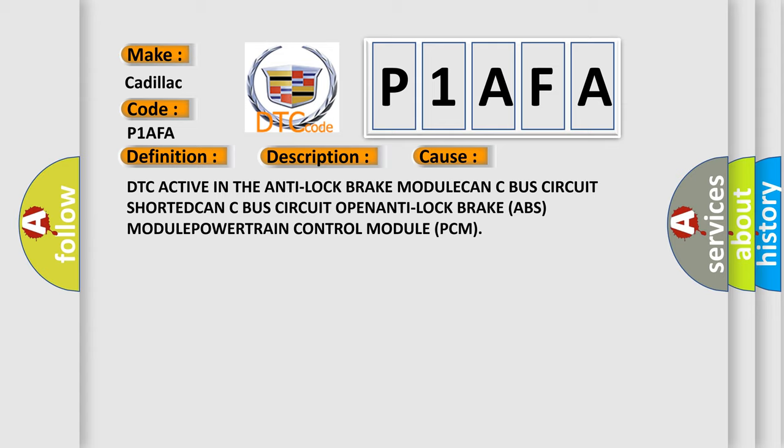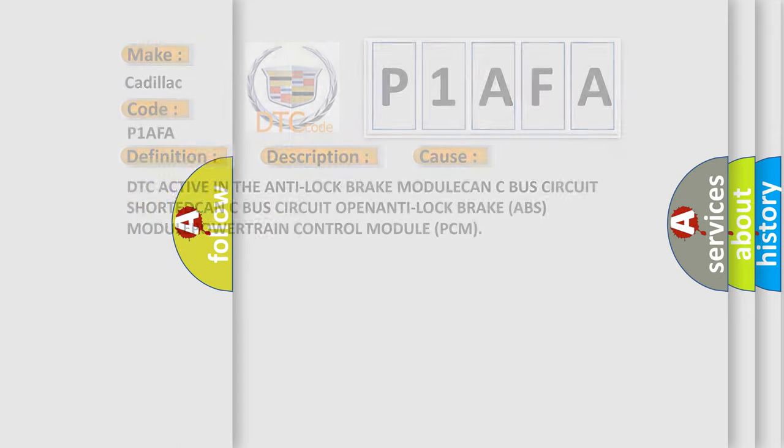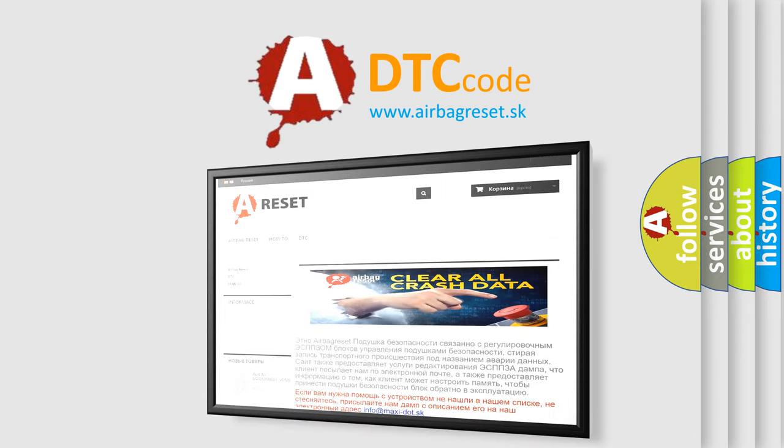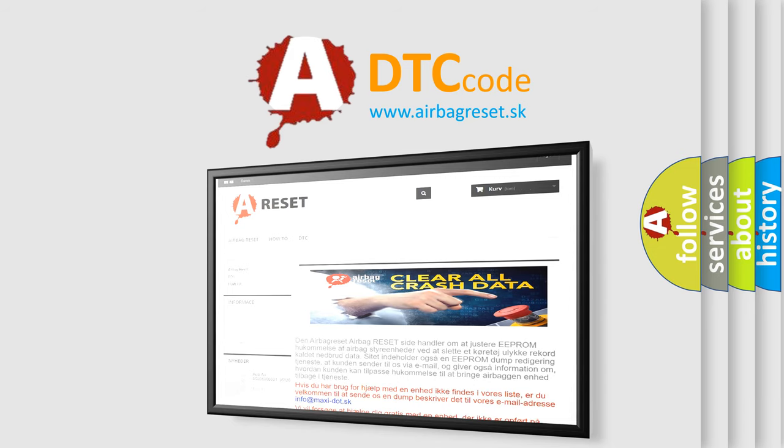DTC active in the anti-lock brake module, CAN-C bus circuit shorted, CAN-C bus circuit open, anti-lock brake ABS module, powertrain control module PCM. The airbag reset website aims to provide information in 52 languages. Thank you for your attention and stay tuned for the next video.